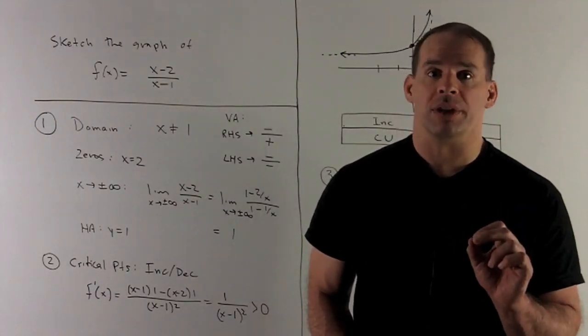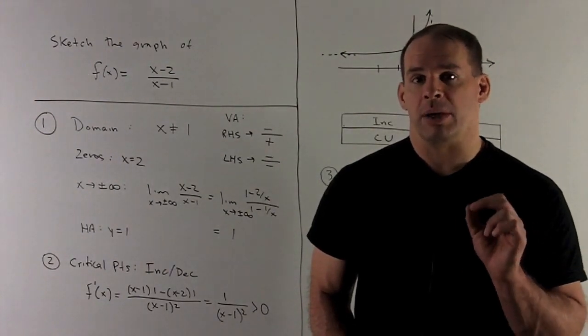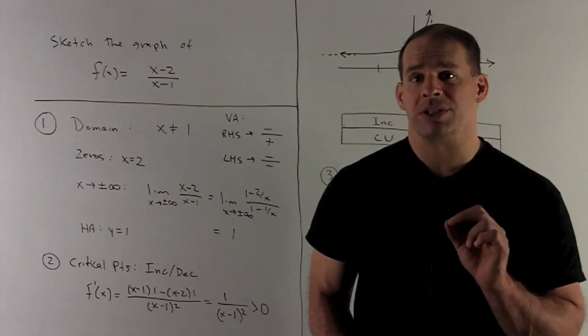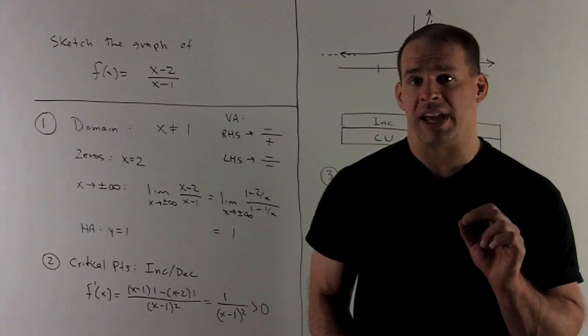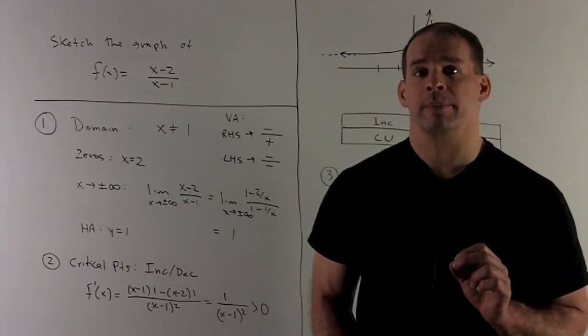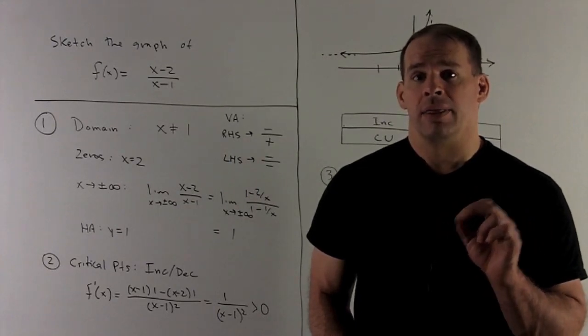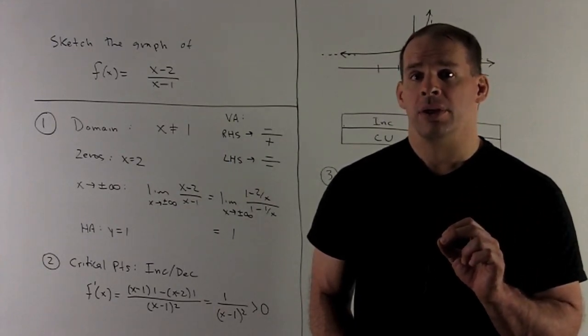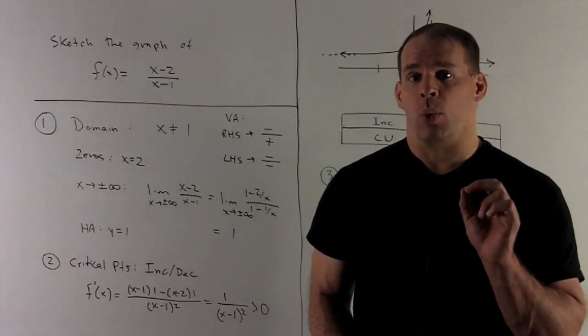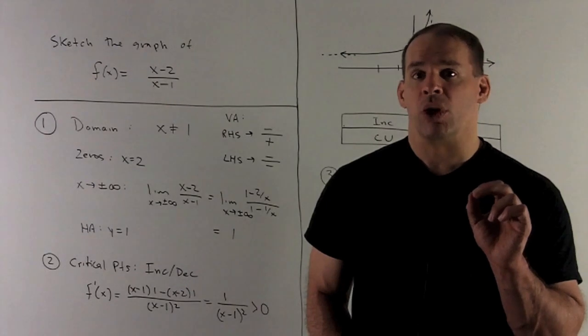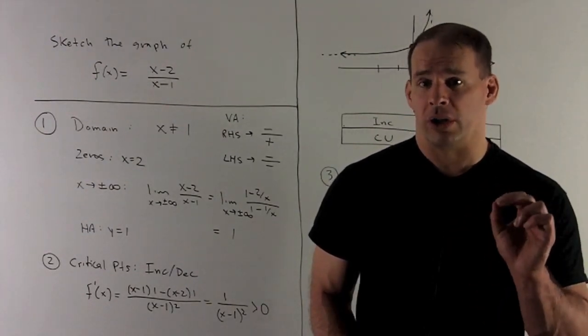We want to look for critical points. First, where's the derivative equal to zero? The only way this can be equal to zero is if the numerator is equal to zero, and that never happens. So that means we'll never have a horizontal tangent line on our graph. Next, I want to worry about the derivative being undefined. That's where we're dividing by zero. We'll get undefined when x is equal to 1. That's not a real critical point. That's actually where the vertical asymptote is. So we have no critical points.